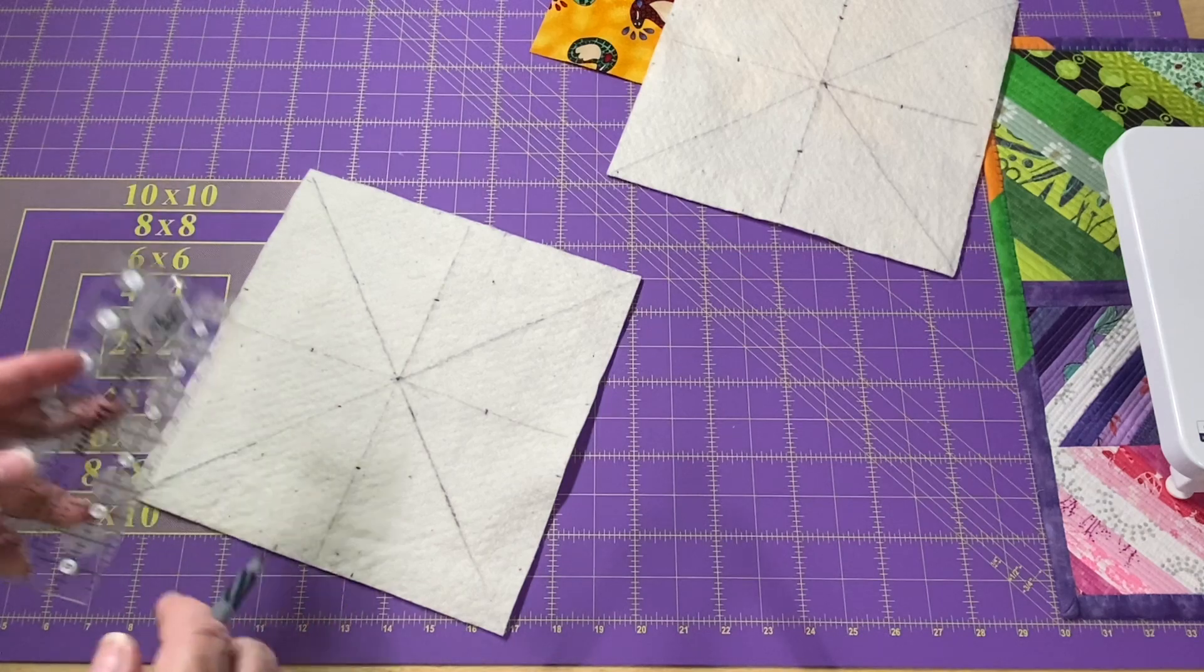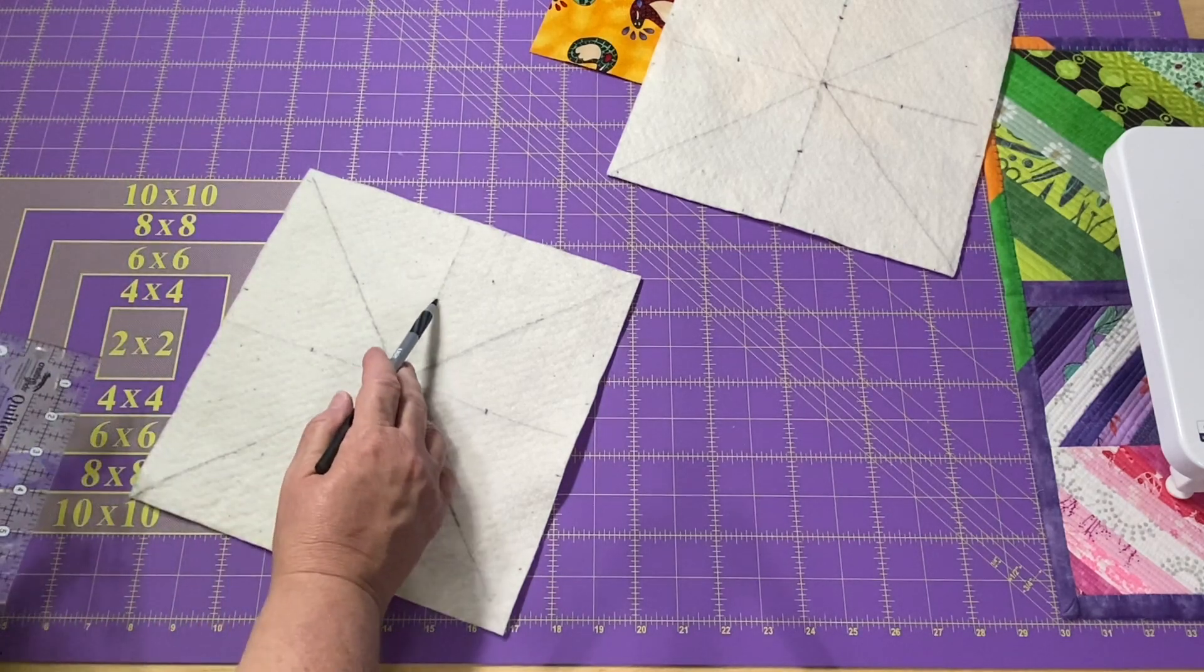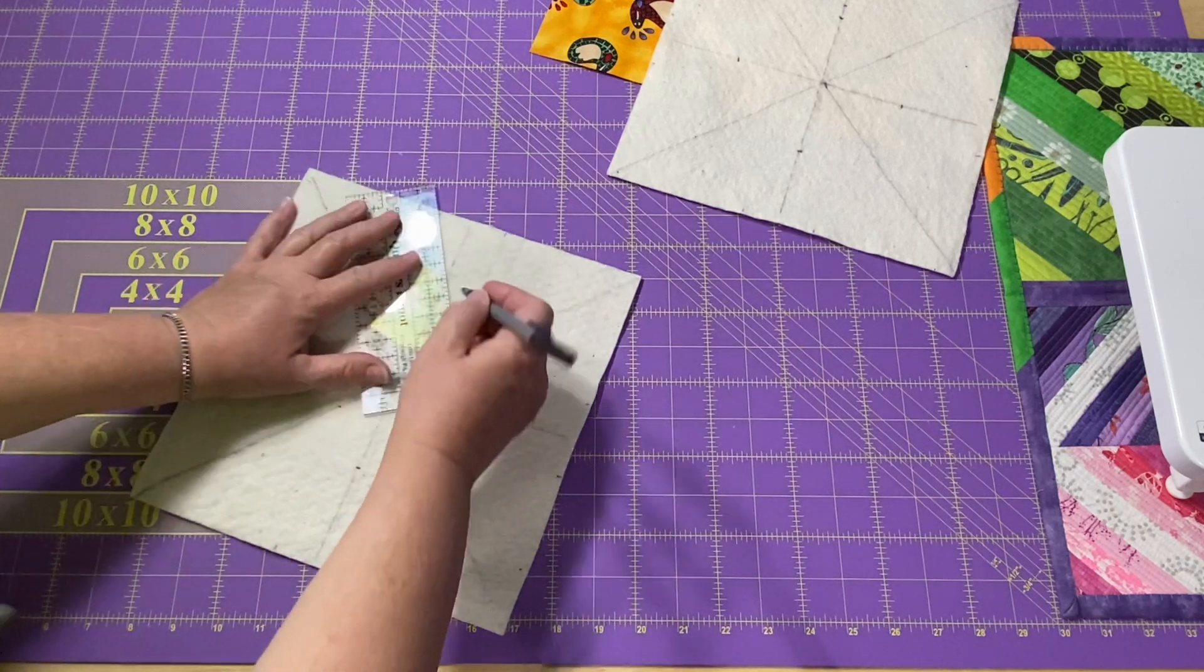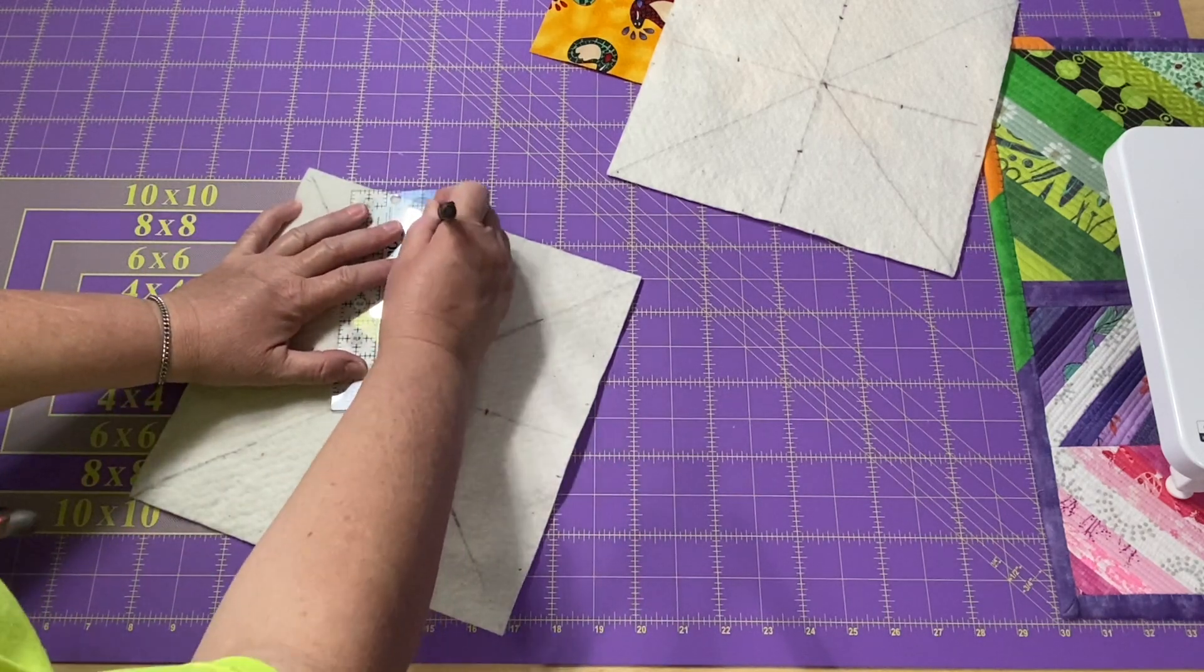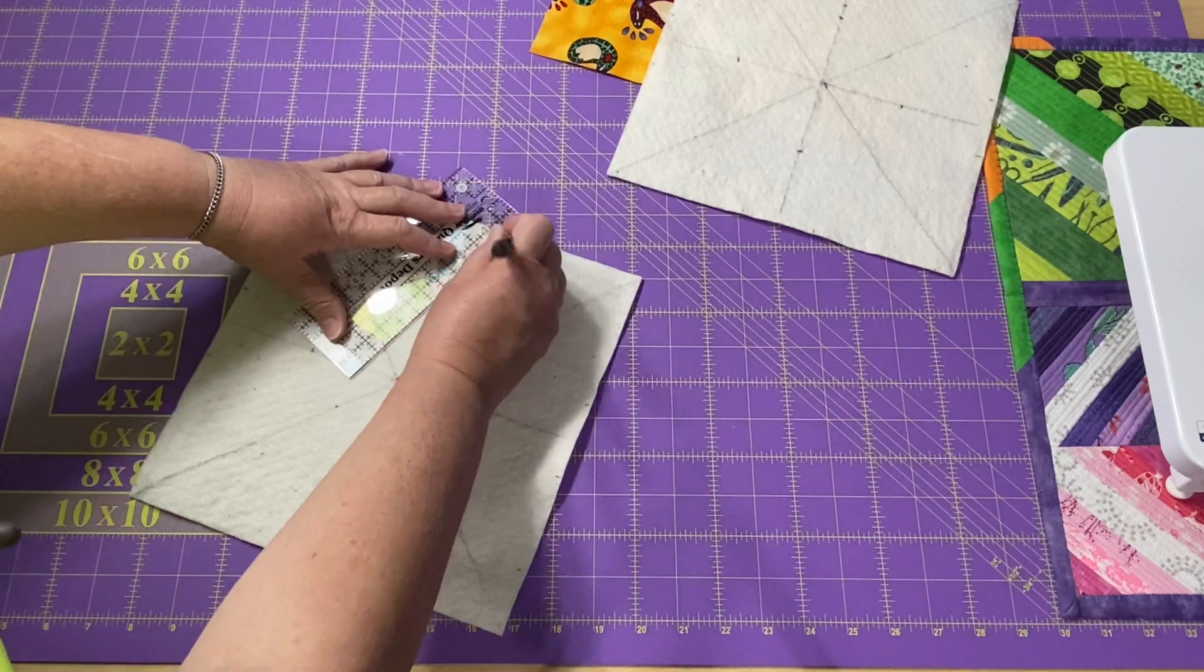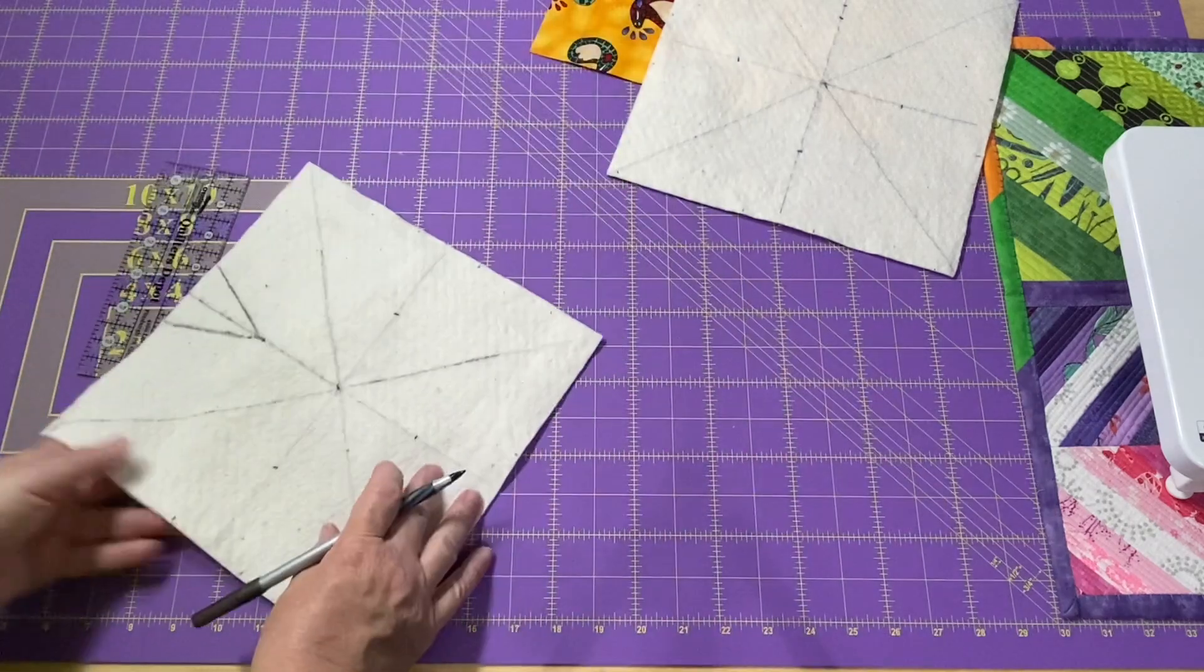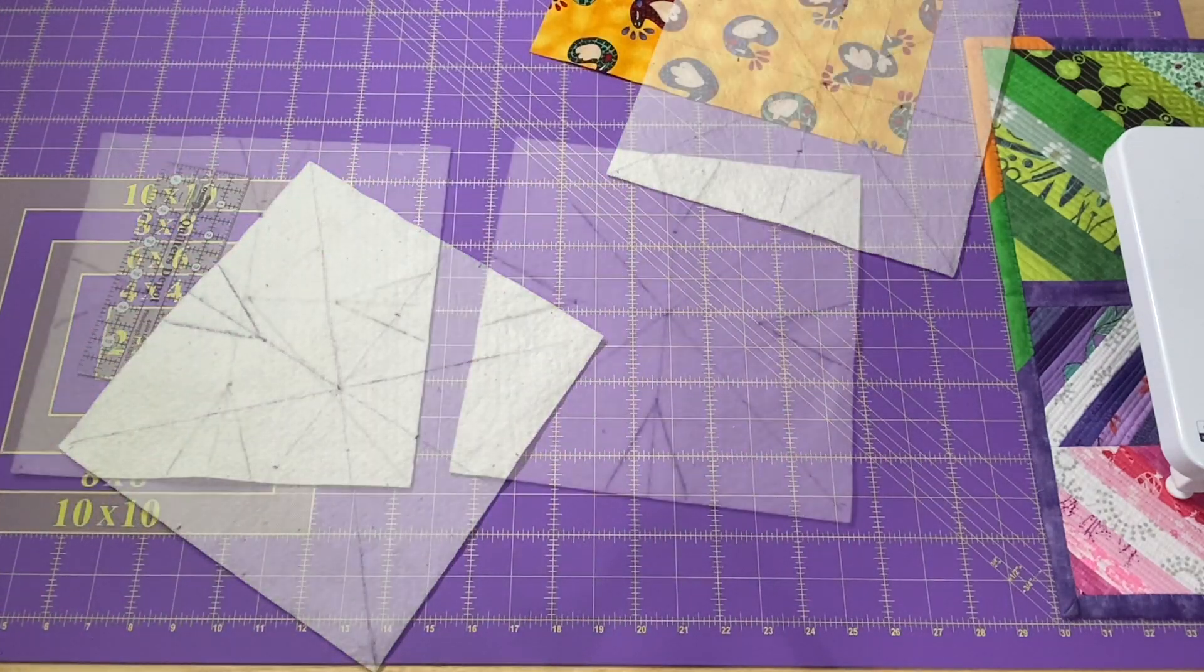Once we have that done, we're going to play connected dots. We're going to go from the 2 1/2 inch mark and we're going to draw a line to the 1 inch, and then to the 1 inch. And that's going to give us that triangle piece for our darts. See how that is there. And again, mark it on both of them all the way around.